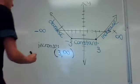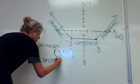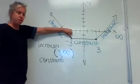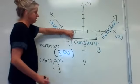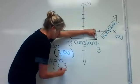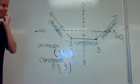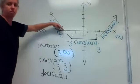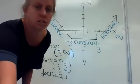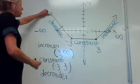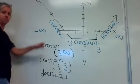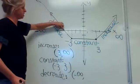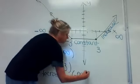The next thing it asks is where is it constant. It starts being constant at negative three and stops at positive three, so constant on the interval from negative three to positive three. And where is it decreasing? The decrease starts at negative infinity and goes all the way until it gets to negative three.